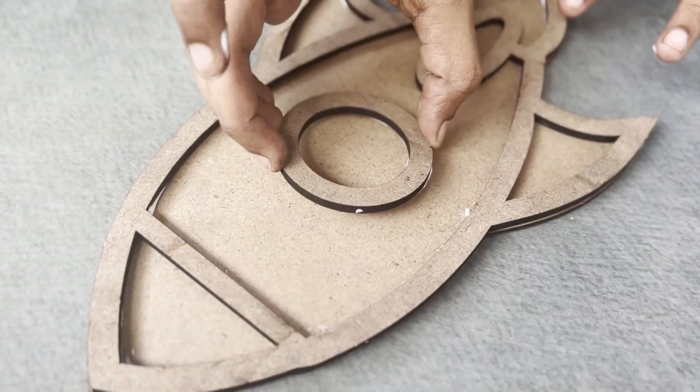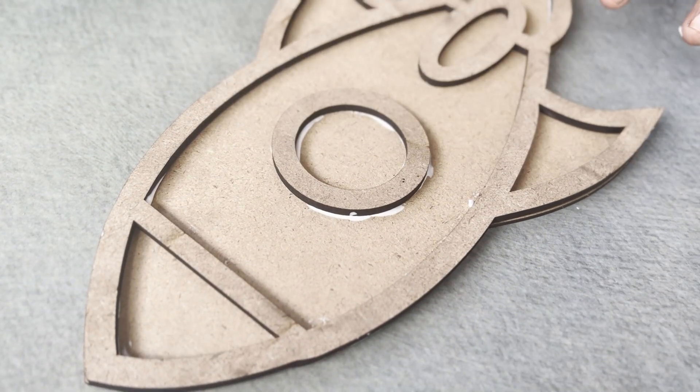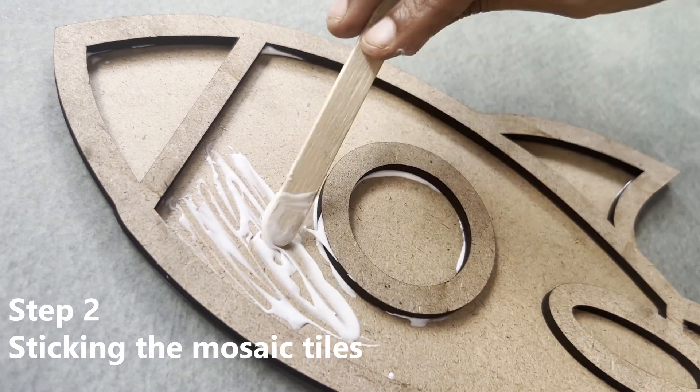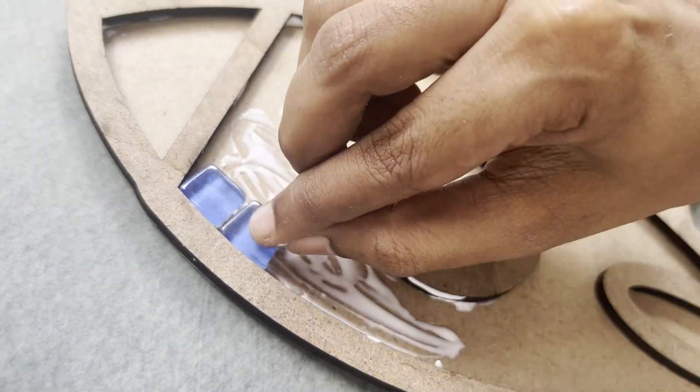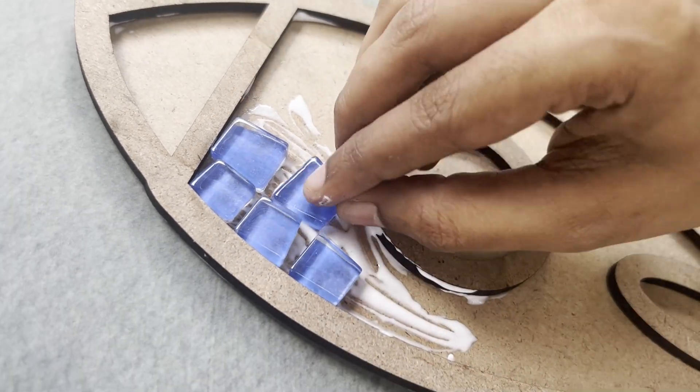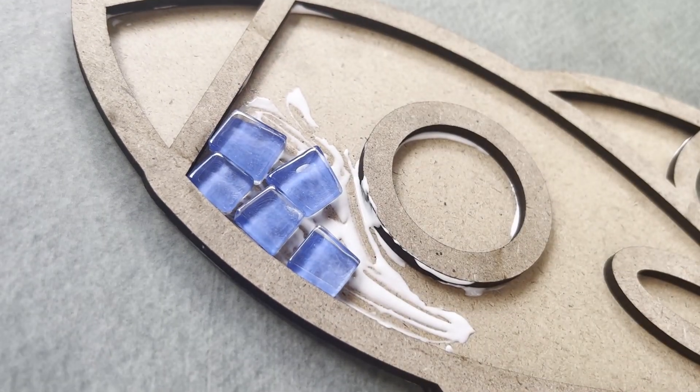Using the applicator, apply glue on a small portion of the base. Carefully place the glass mosaic tiles onto the glue. Follow your design to create a random pattern or any particular color pattern of your choice.